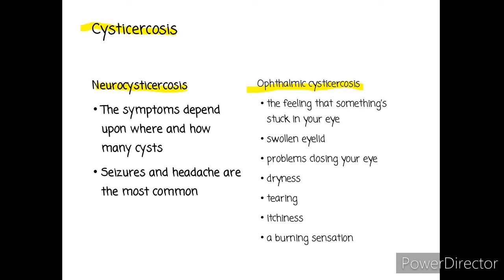In ophthalmic cysticercosis, the symptoms include the feeling that something is stuck in your eye, swollen eyelid, problems closing your eye, dryness, tearing, itchiness, and burning sensation. Muscular cysticercosis is typically asymptomatic.